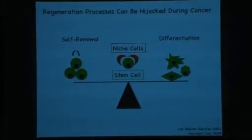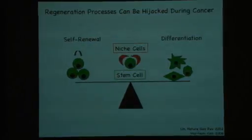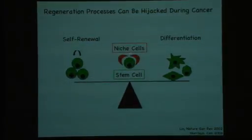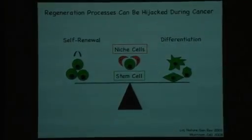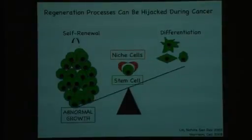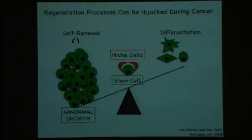Hi everyone. I'm very excited because it's my first time giving Grand Round. My lab has been here for about two and a half years and we are interested in understanding basic principles of regeneration and how they relate to cancer. As you might know, support for regeneration is greatly provided by stem cells and the cells that surround them, which we refer to as niche cells. Stem cells must balance self-renewal with differentiation in many different lineages. Alterations within the stem cell or the niche can lead to an imbalance of these processes and thereby lead to abnormal growth and cancer.